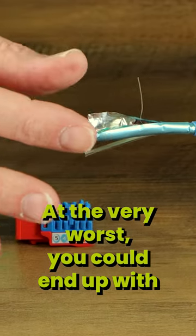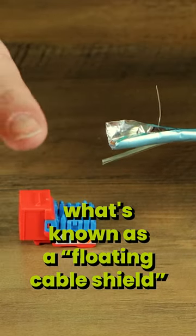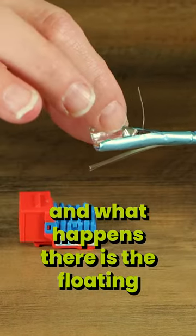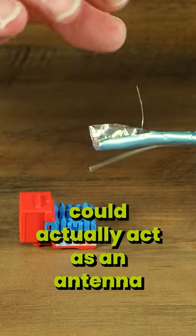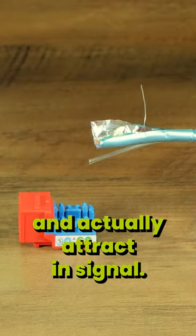At the very worst, you could end up with what's known as a floating cable shield. And what happens there is the floating cable shield could actually act as an antenna and actually attract in signal.